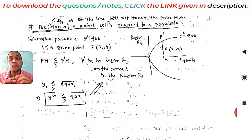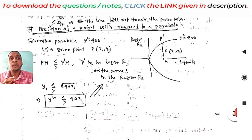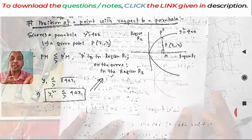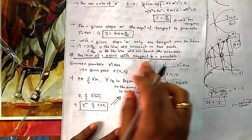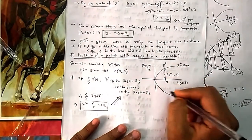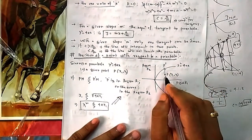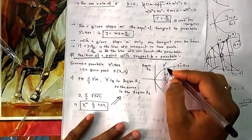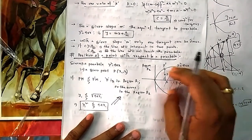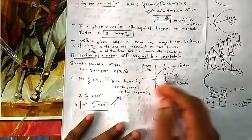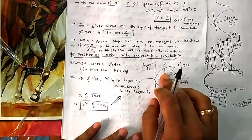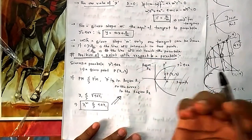Today we'll see what is the position of a point with respect to a parabola — whether it is in Region 1 or Region 2, or loosely speaking, inside or outside the parabola. Suppose you have a parabola and a point P. This side is Region 1 (inside) and this side is Region 2 (outside). You have to identify whether P is in Region 1 or Region 2.